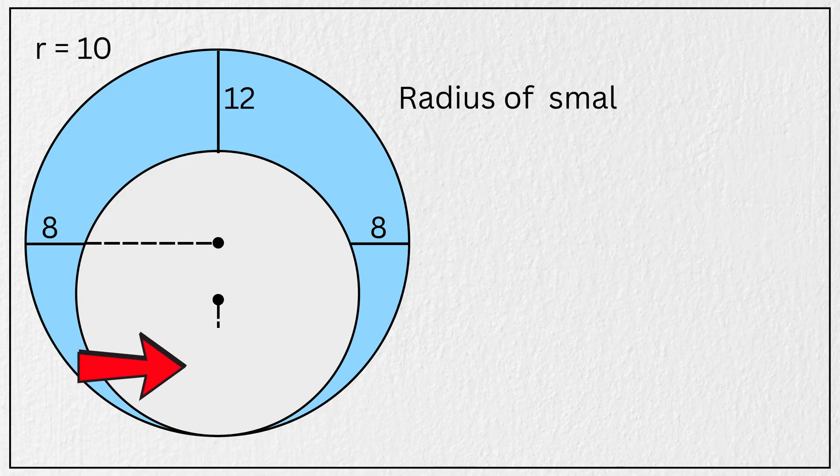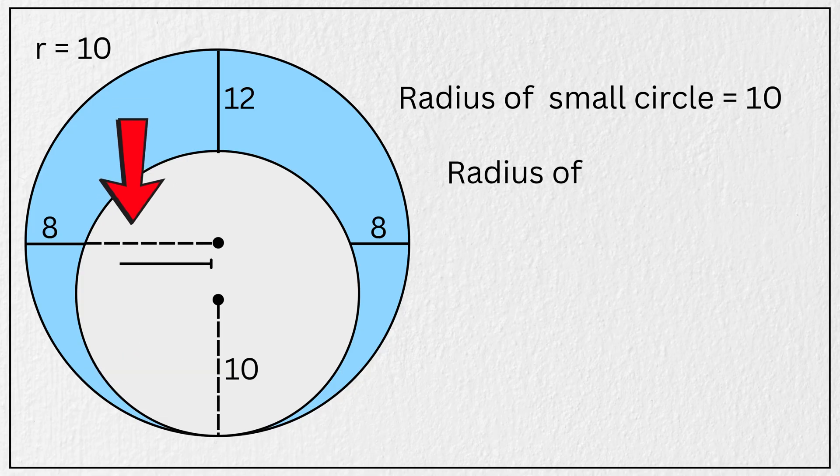That means the radius of this smaller circle is 10 units, and the radius of this larger circle is 10 plus 6, which is 16 units.